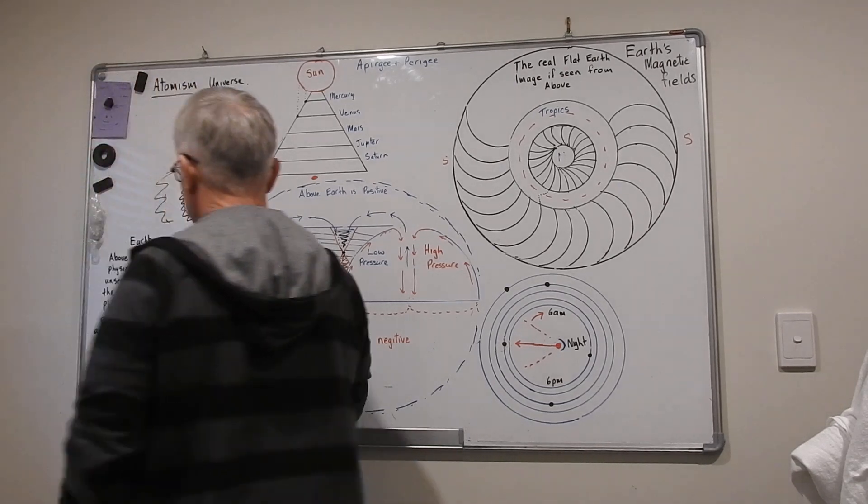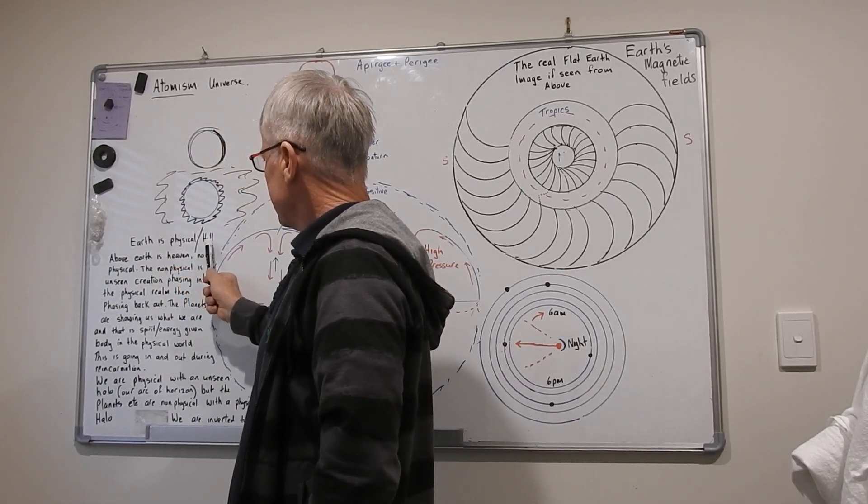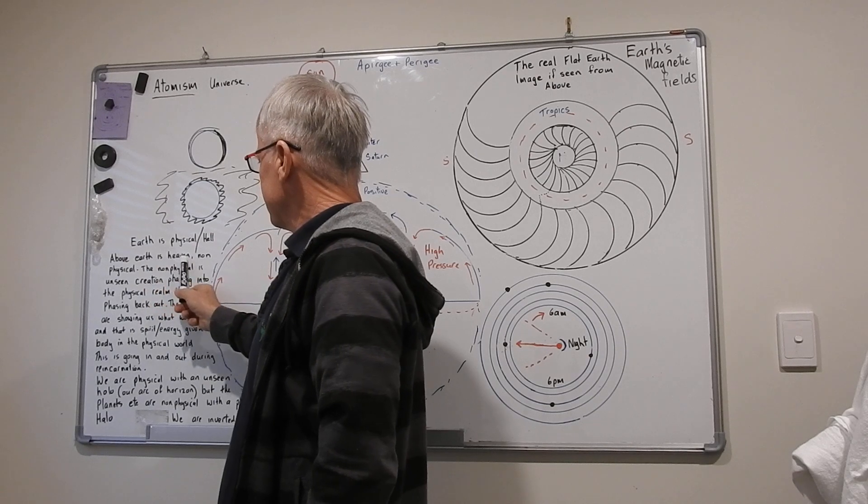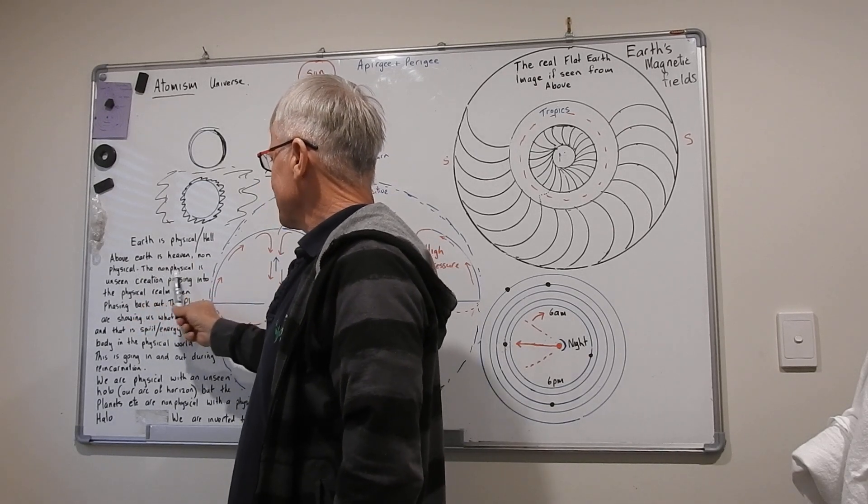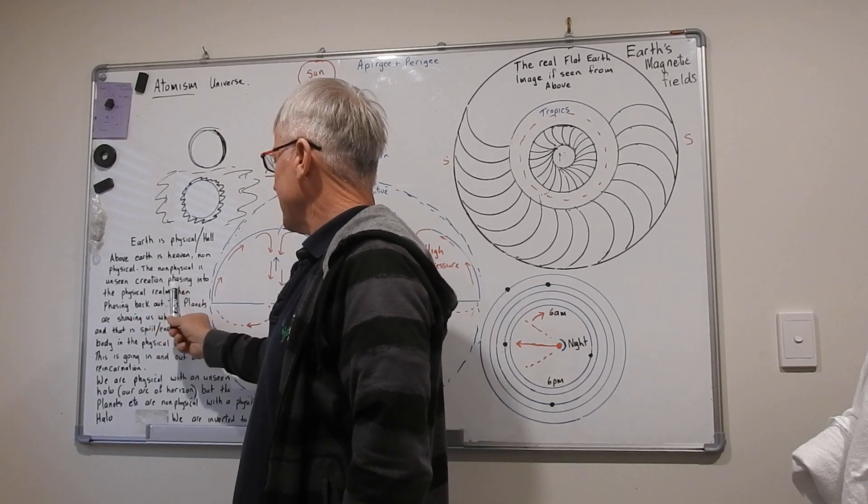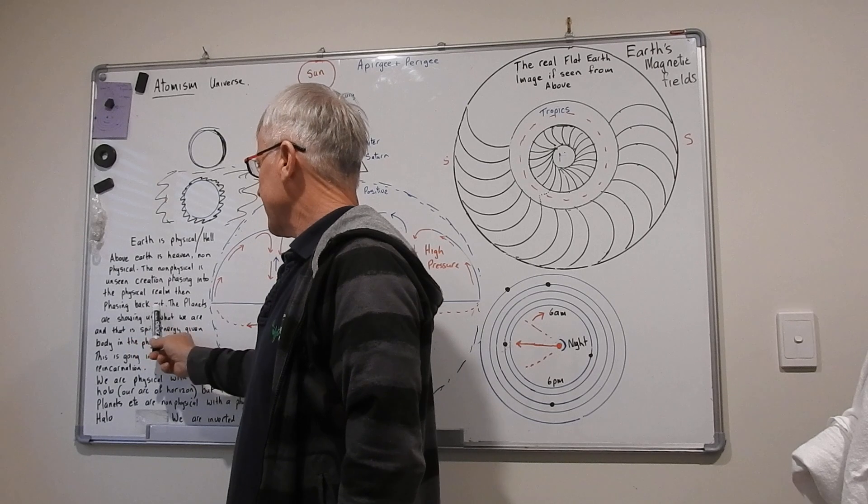And that's how it works. Earth is the fifth element - is physical. This is hell. Above earth is heaven - non-physical. The non-physical is unseen creation phasing into the physical realm then phasing back out.